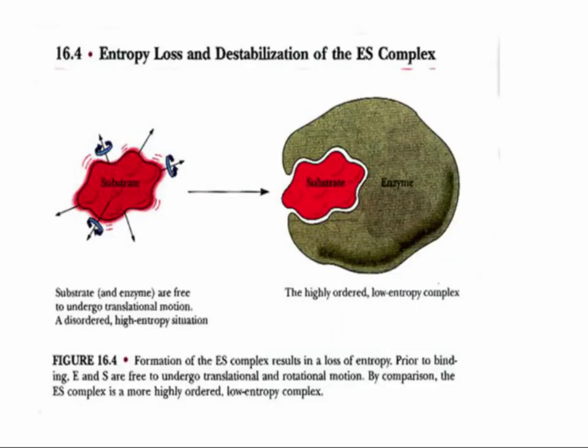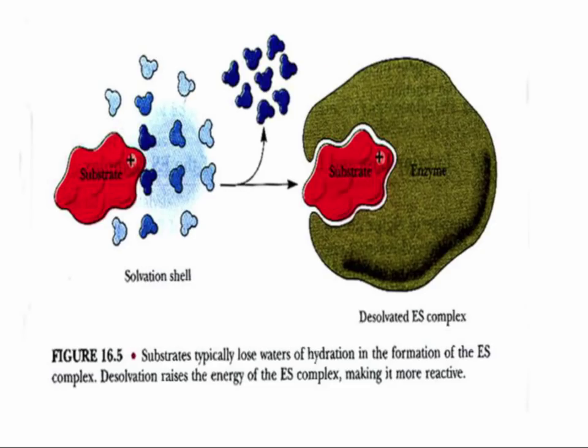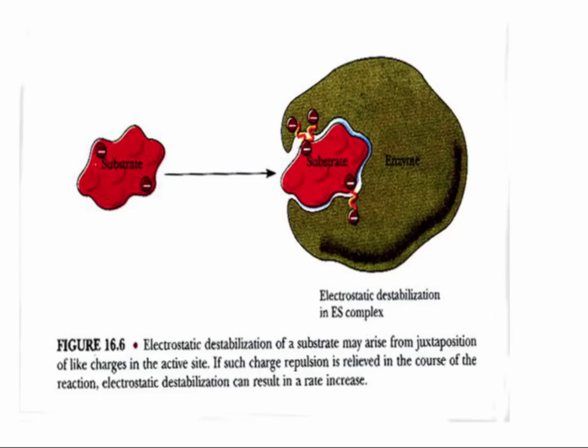Binding to the enzyme reduces random tumbling and stretching of the substrate. This is a low entropy state that favors reaction of the ES complex. Substrates often have water tightly bound to their surface, and binding to the enzyme can release this water and make the substrate more reactive. If repulsive charges occur between substrate and enzyme and these repulsive forces can be relieved during reaction, the reaction rate may be speeded.